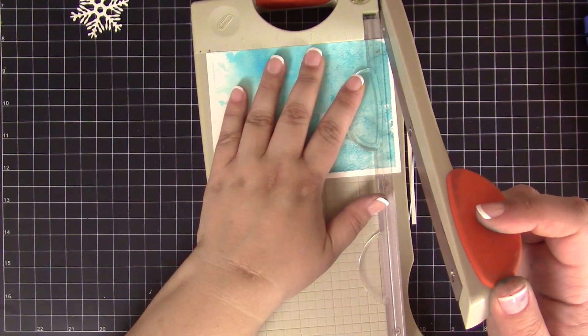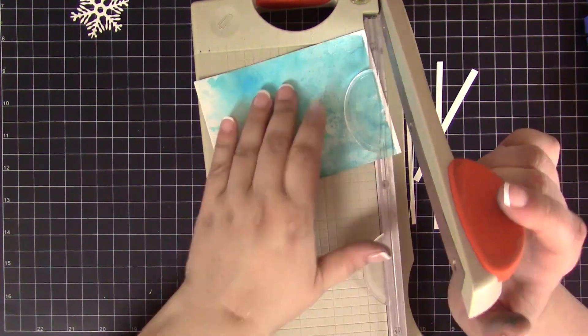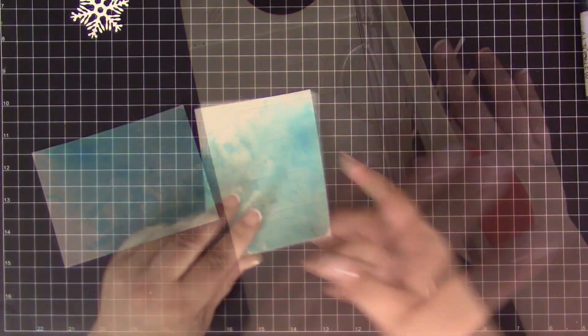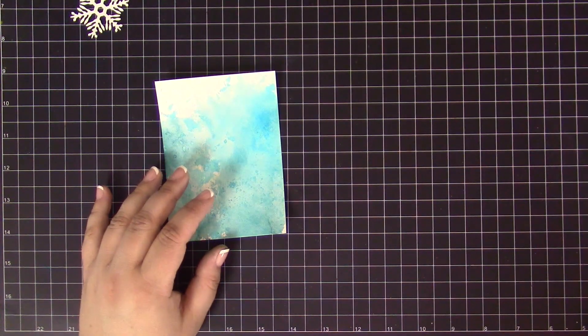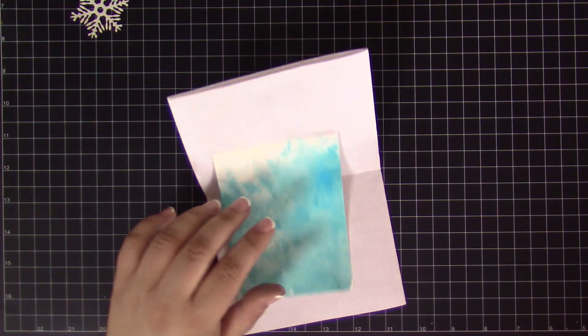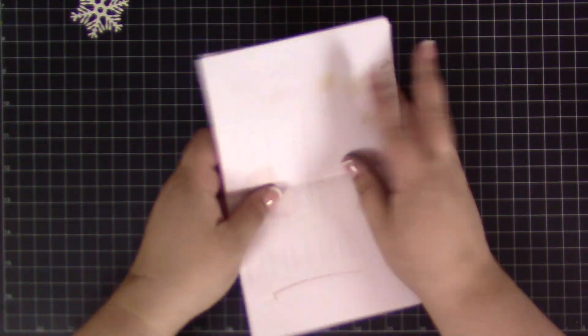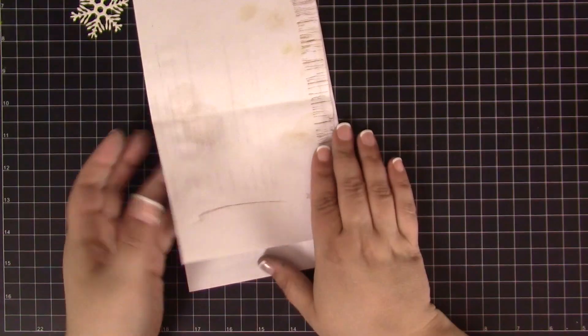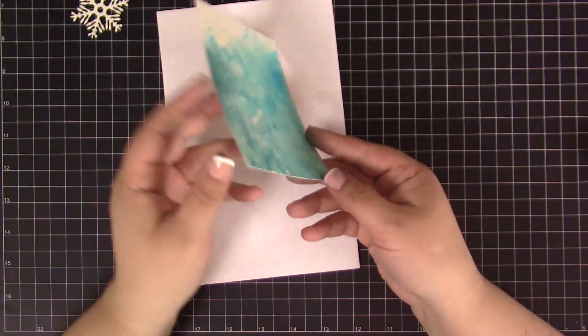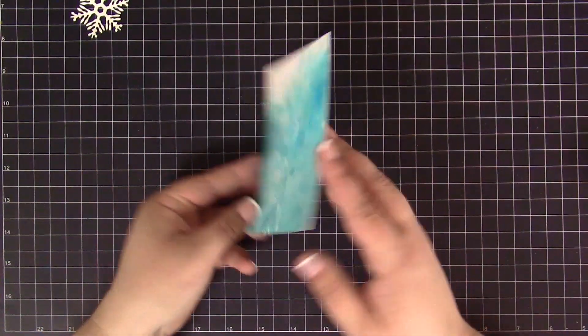Now it's time to start assembling the card. First I trimmed the white edges of the panel. Even though I taped it down, it's still a bit warped from the water I was adding to it. To flatten the panel I'm placing it between two sheets of printer paper folded in half, and then I went ahead and ran it through my die-cutting machine. This trick helps to flatten warped paper.